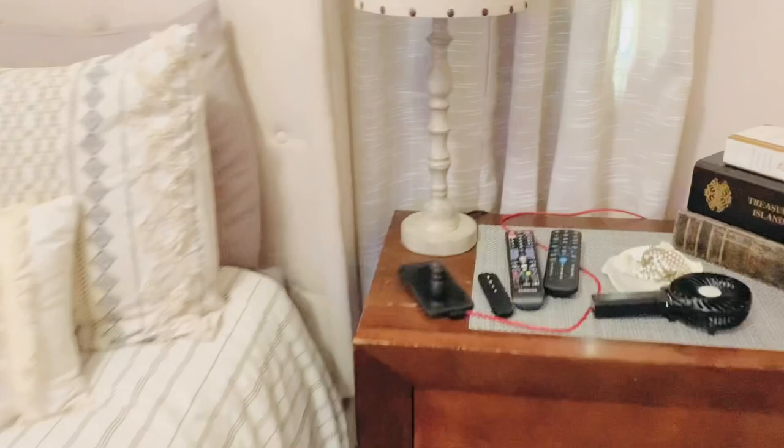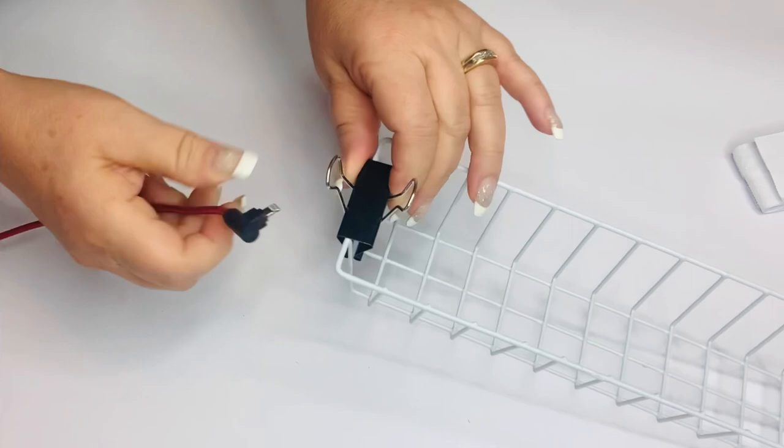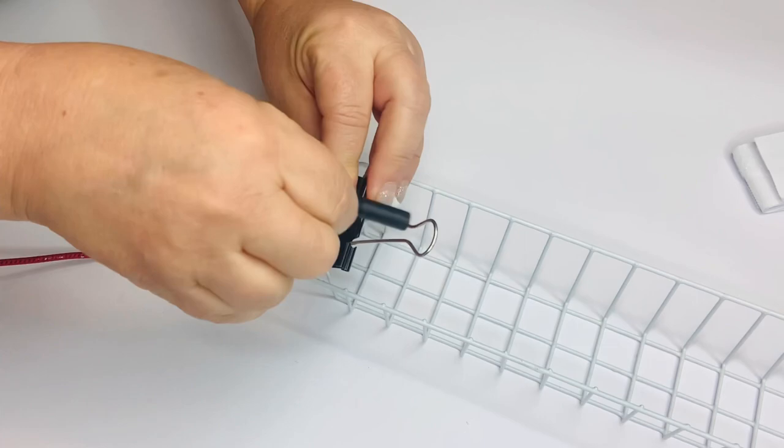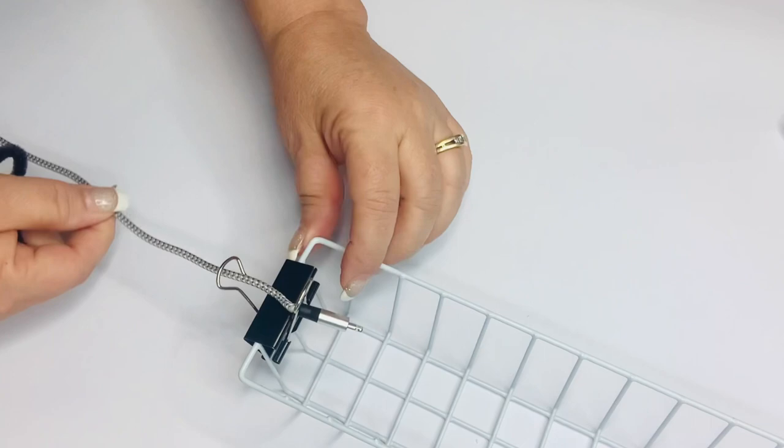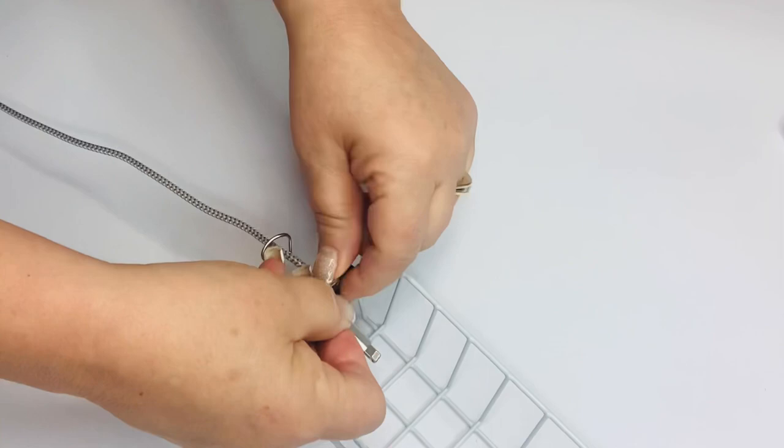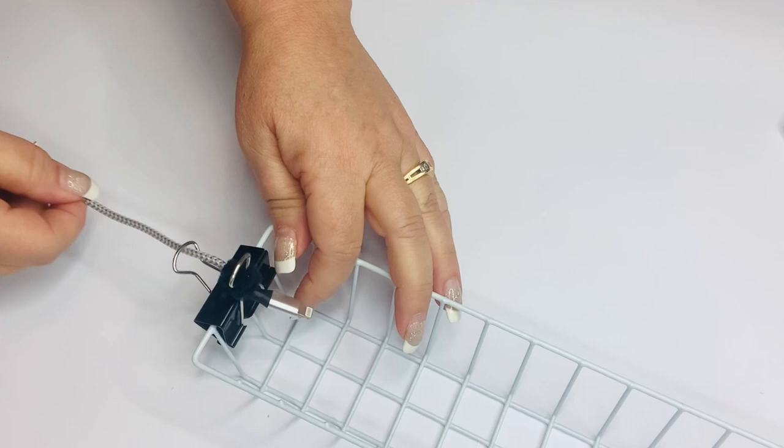In my bedroom my side table is always cluttered with remotes, my cell phone, glasses, and one thing that always bugs me is trying to find the end of my cell phone charger. So I'm using one of Dollar Tree's binder clips. If you just clip that to the side and then feed your charger through those top clamps, you'll always have easy access to them and they won't fall out. I tried this on a bunch of different chargers and all of them fit, but some were too small so they would fall back out. To fix that, I took some chenille stem and added it to the opening of my binder clip and then I could let it go and it wouldn't fall back through.